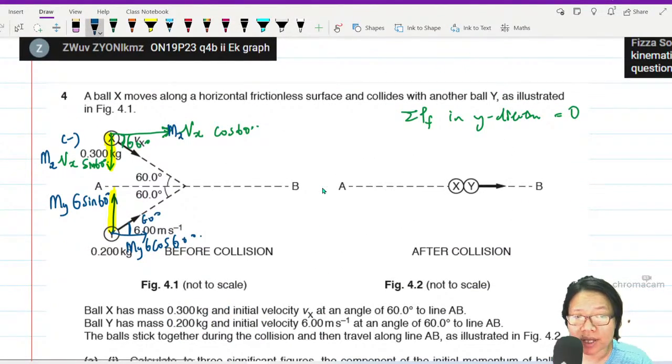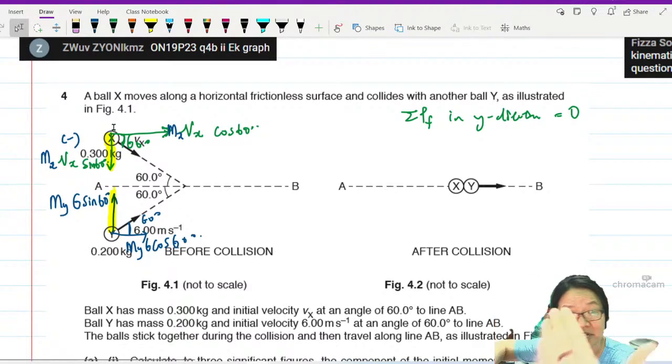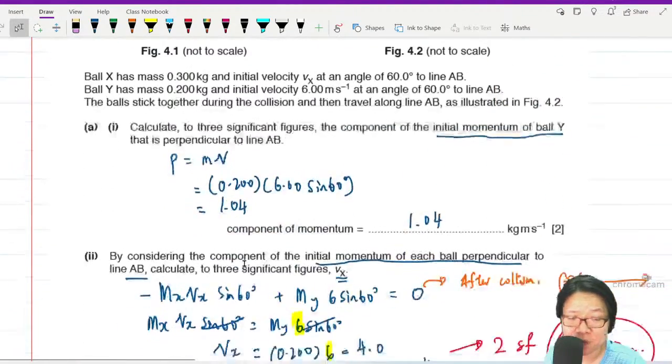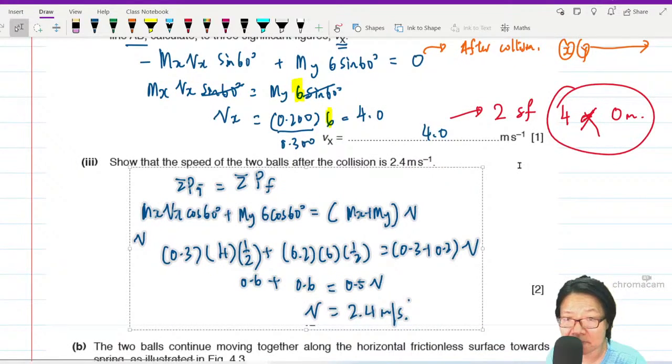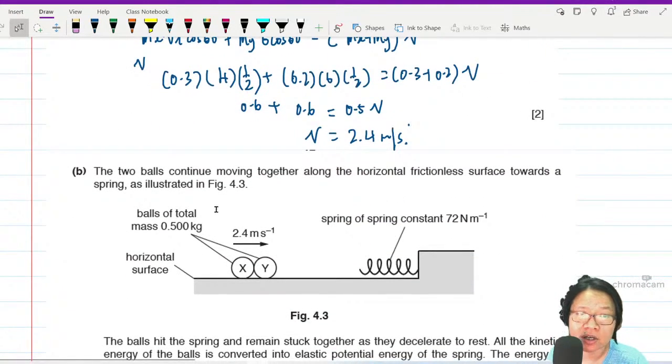When they collide, they exert a force on each other such that the vertical momentum cancel out. So the only thing left is the horizontal momentum. X will push Y, Y will slow down. Y will push X, X will slow down in the vertical direction. So after that, you only got horizontal left. All three laws are happening at the same time. Follow the question.